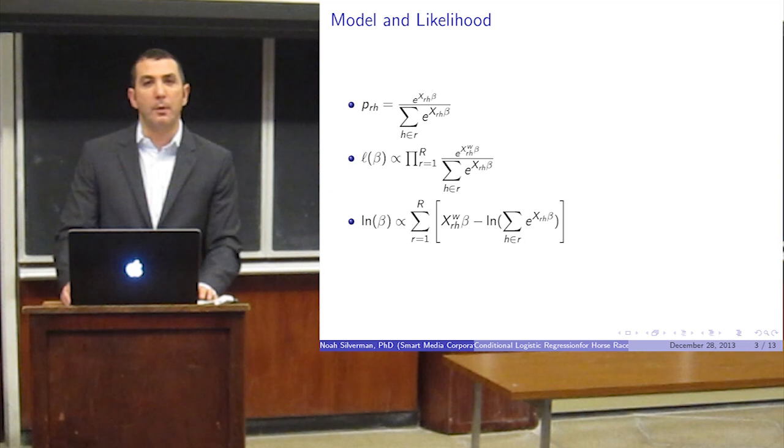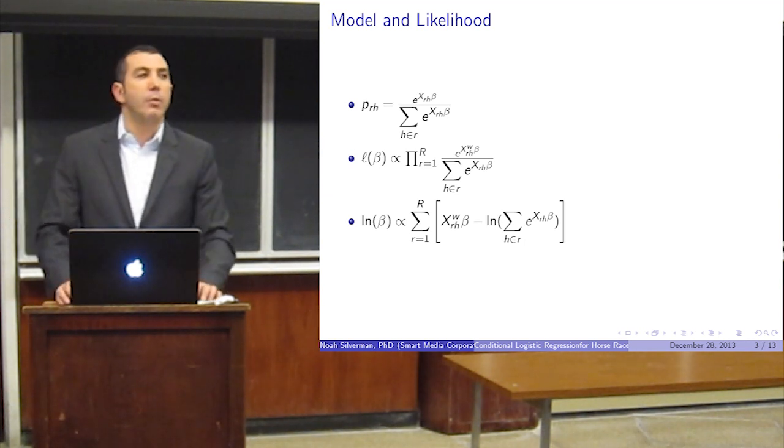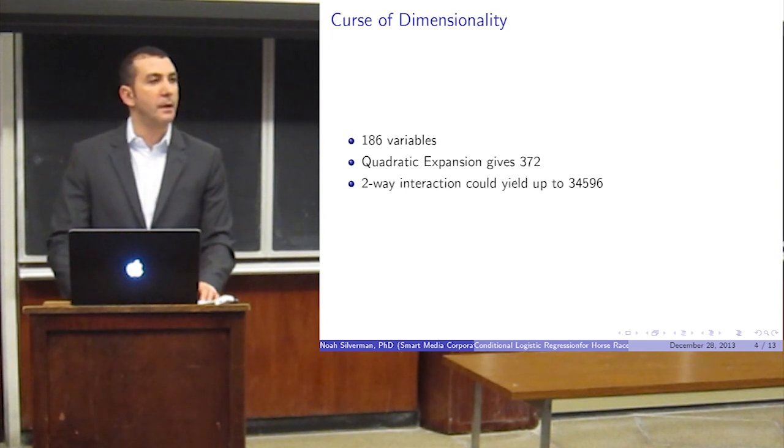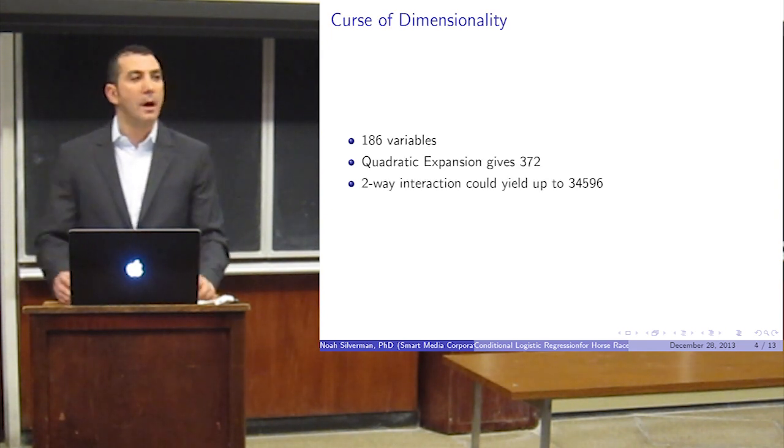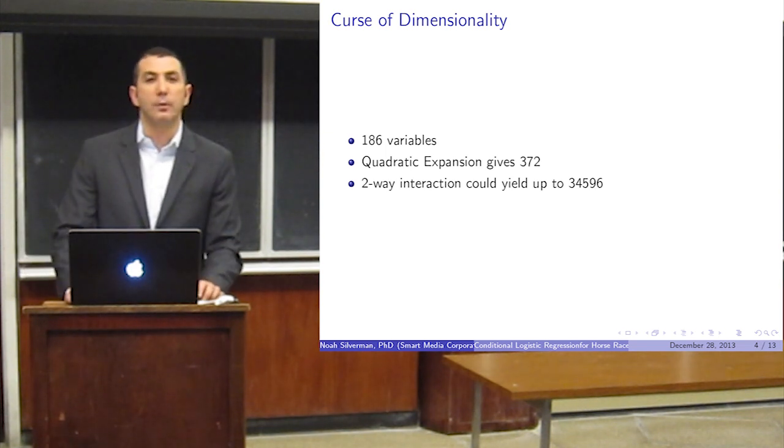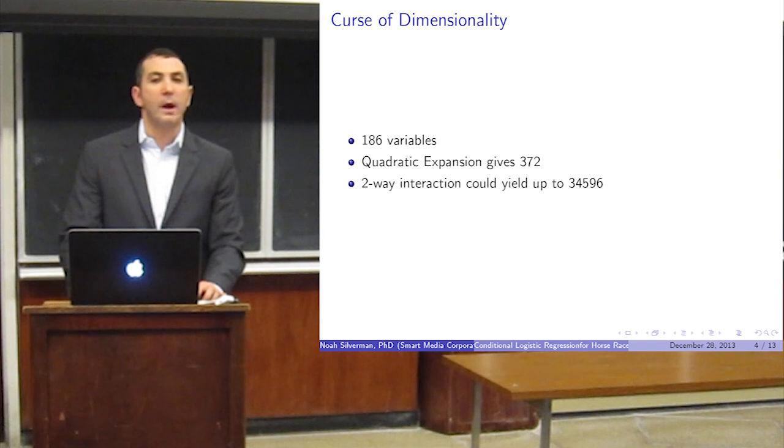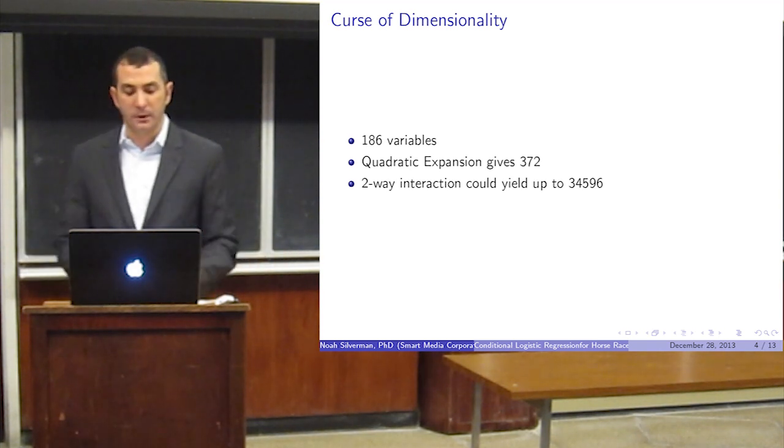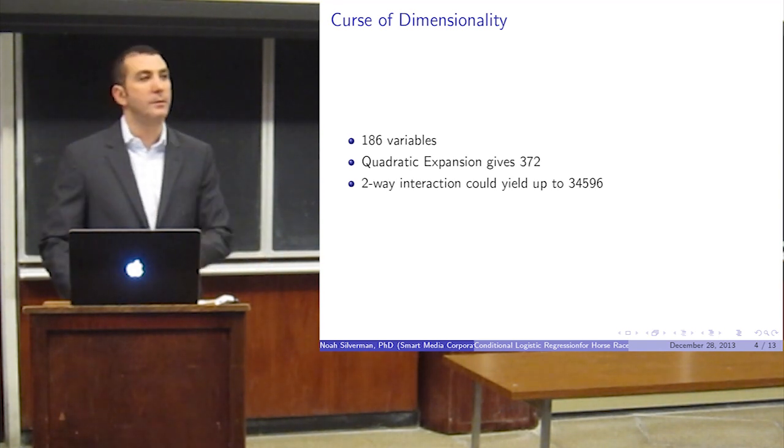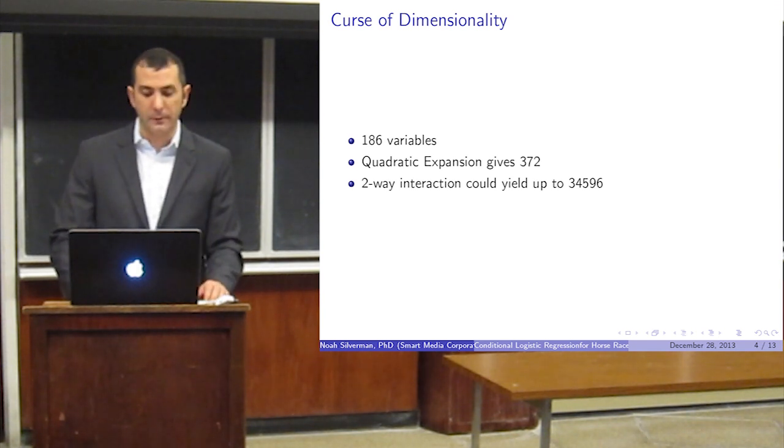Now, this is an easy enough problem, and you can solve this with plenty of off-the-shelf software. The problem is there's a curse of dimensionality. Just working with some basic factors of the race, I have 186 variables, and I'm sure other people have many more. If you want to look at the quadratic expansion of each of those variables, you get up to 372. If you want to look at every possible two-way interaction to see what might be significant, you're now at 34,596 variables. There is no off-the-shelf software that's going to fit that.